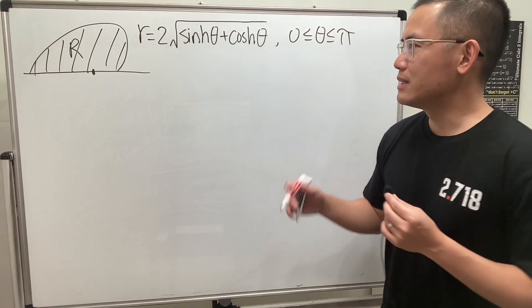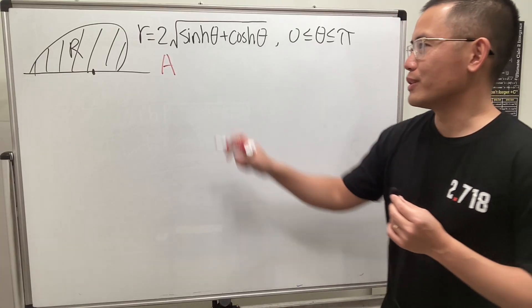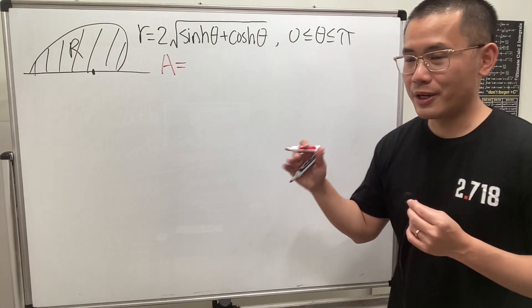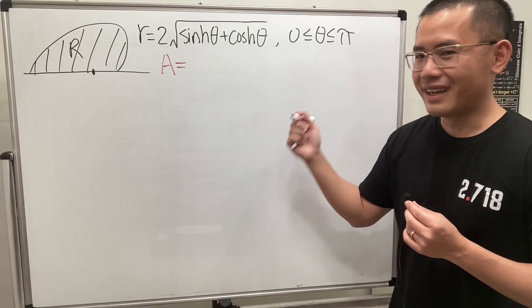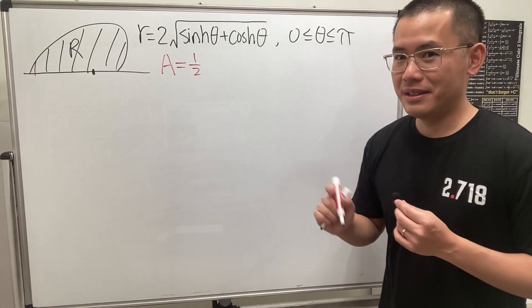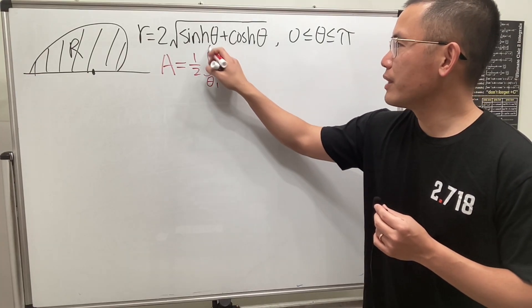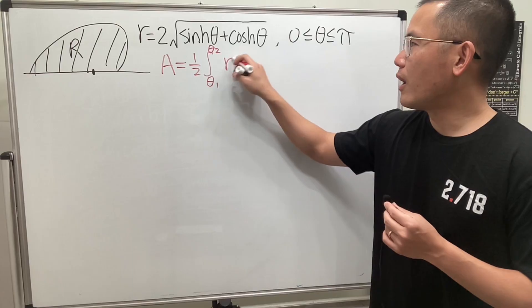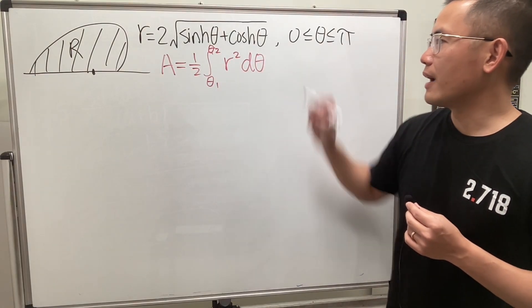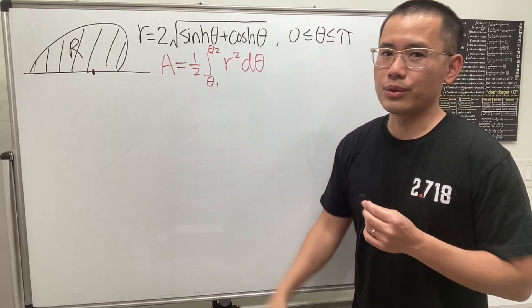So it's actually just a pretty straightforward integration question. The area is equal to, you just have to remember the formula. I will write this down for you guys. It's 1 half, remember there is a 1 half, and then we have the integral theta 1 to theta 2, and then r squared d theta. Some people, of course, they put a 1 half inside, that's totally okay.